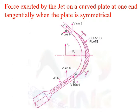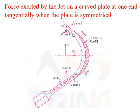Let V be the velocity of the jet of water and theta be the angle made by the jet with the x-axis at the inlet tip of the curved plate. If the plate is smooth and the loss of energy due to the impact of the jet is zero, then the velocity of water at the outlet tip of the plate will also be equal to V. The velocity is resolved into two components: V cos theta and V sin theta.